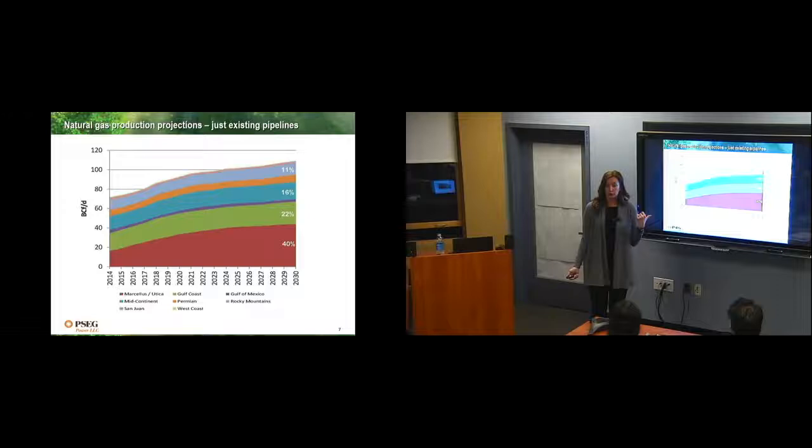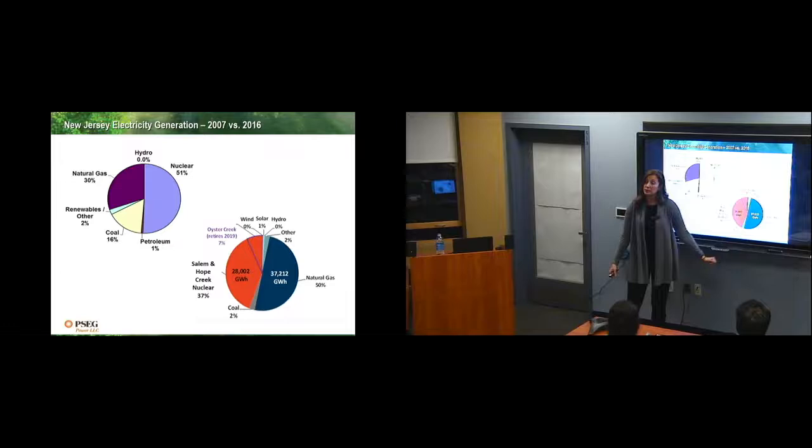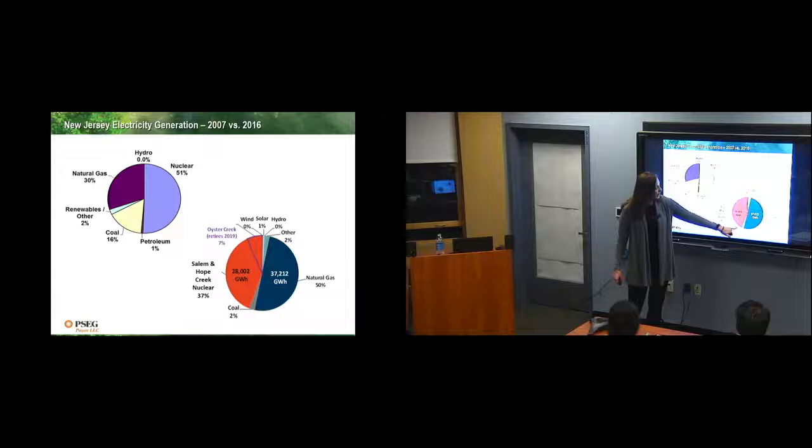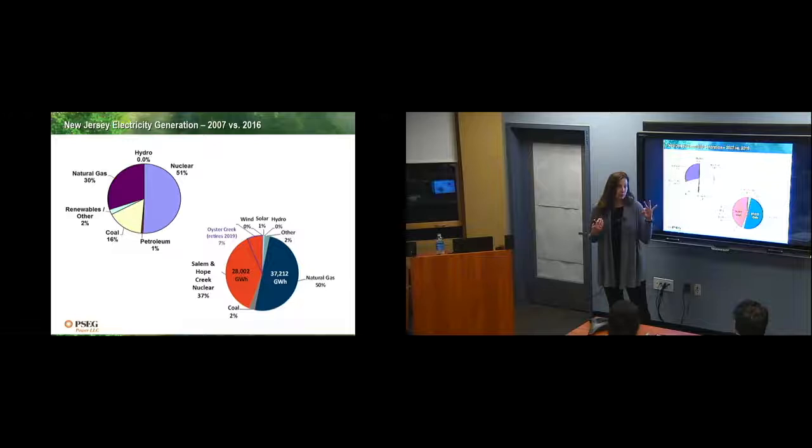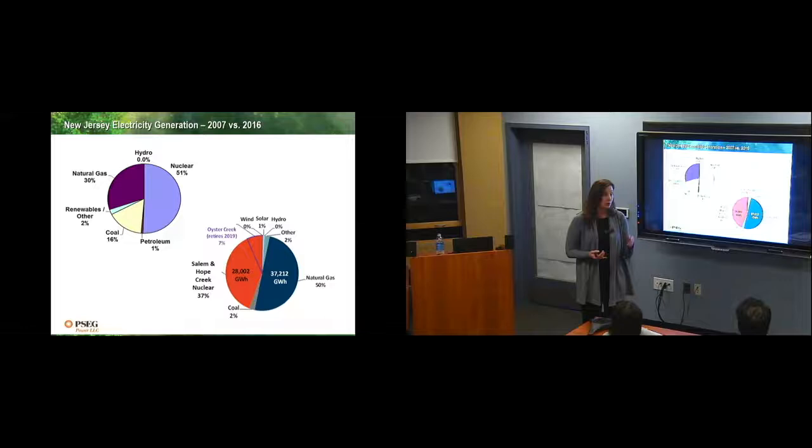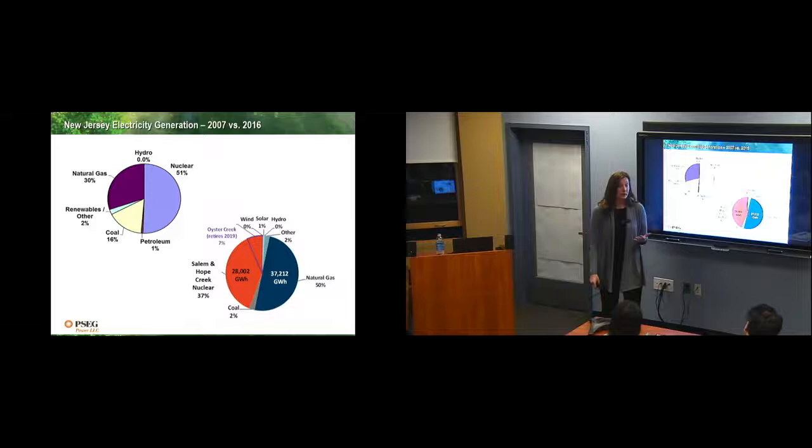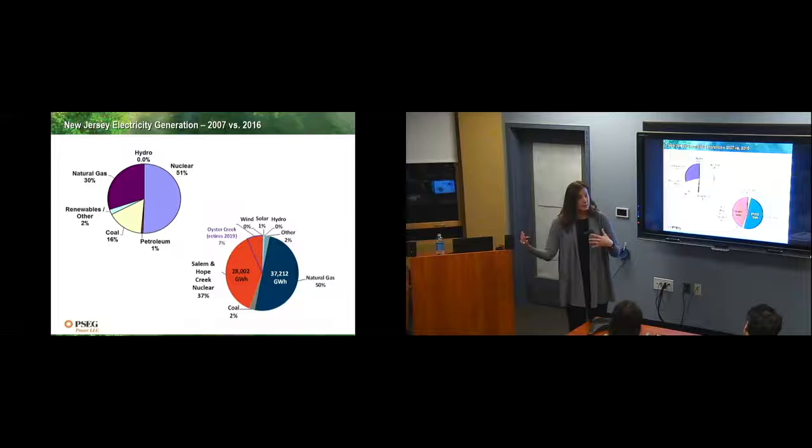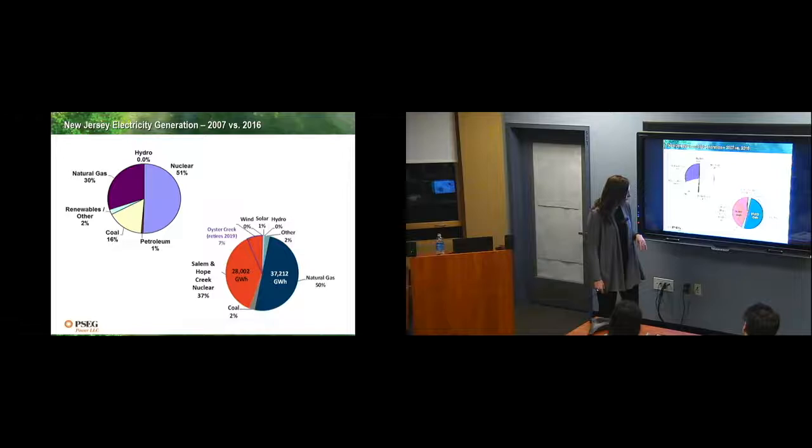2007 versus 2016. The boom of natural gas obviously occurred, and now we're 50% natural gas in New Jersey. Coal has all but gone away by 2016. In 2017's numbers, coal will be gone in New Jersey. So we are producing 37% at our nuclear reactors. We have three reactors. So we're producing 37% of the energy in New Jersey. And then Oyster Creek is 7%. They just announced yesterday that it's going to be 2018 now. October of this year, Oyster Creek will close its doors. That will be replaced with natural gas.